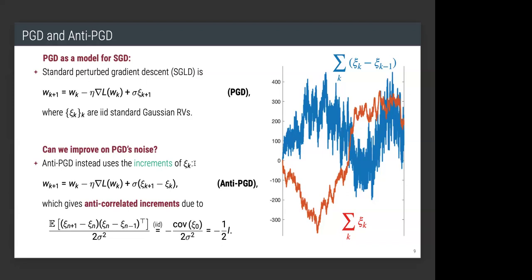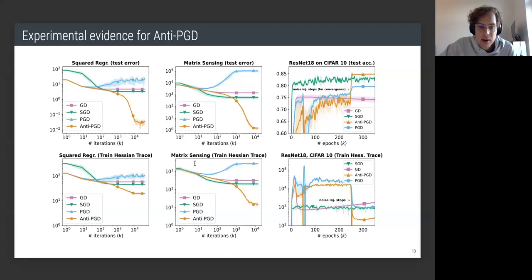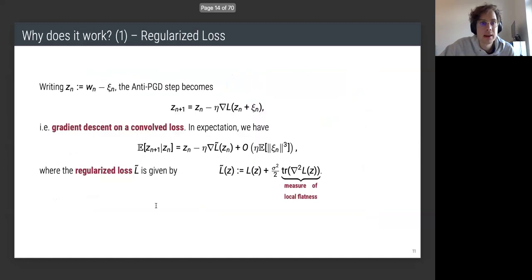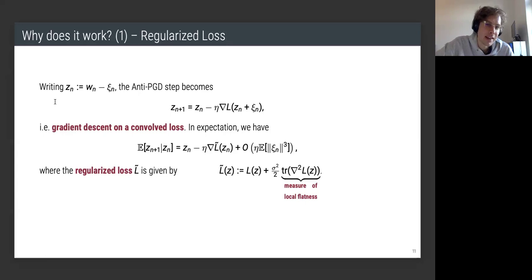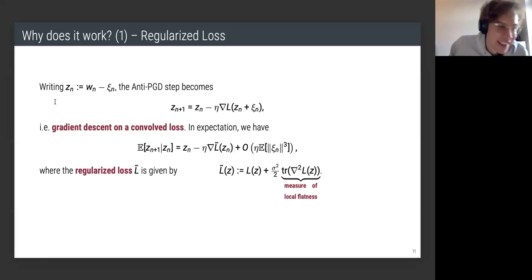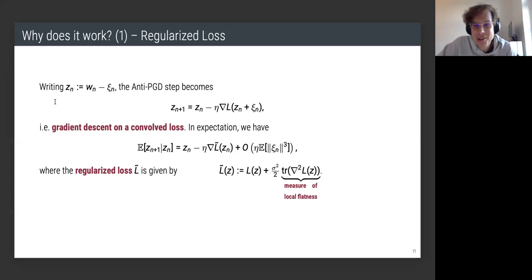Long story short: we observed that the Hessian trace gets lower and test metrics get better when anti-correlated noise is injected — a pretty robust finding. Now, why does it work so well? I'll offer two explanations. These are perspectives on something very complicated; in high dimensions, when people claim they fully understand deep neural networks, there are always many competing theories.